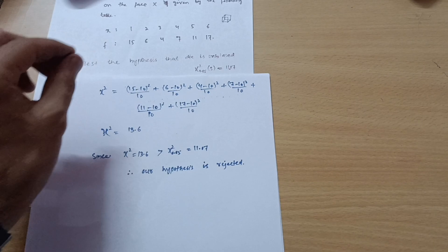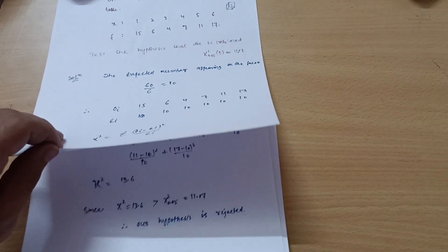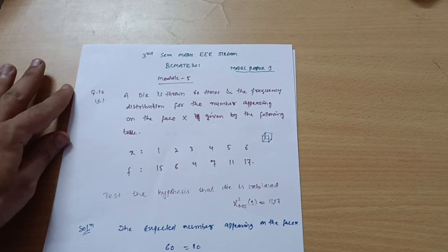If we are getting less than the value 11.07, then in that particular case we can write down the die is unbiased. Here the die is not unbiased. This is the solution of this particular question. I hope this is clear to you people.